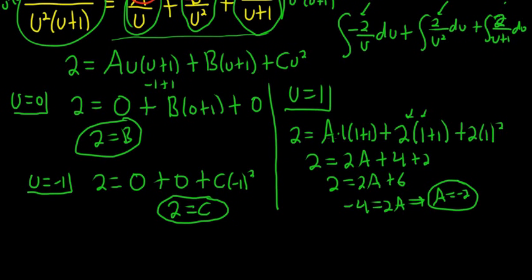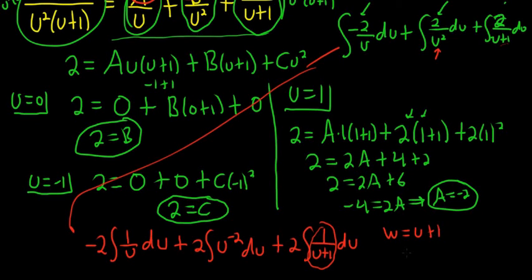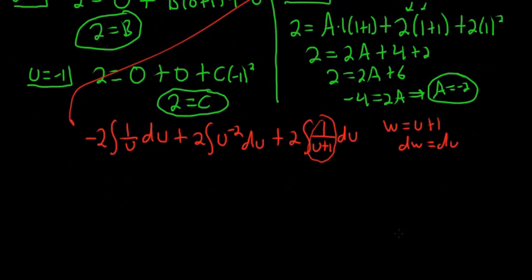All right. I'm going to go ahead and rewrite all this down here so I have more room to work. So this one is negative 2, 1 over u du. That's a really easy integral. It's a ln. This one, we can bring the u upstairs, and we'll use the power rule. So 2u to the negative 2 du. And for this last one here, I'll go ahead and write it again. So plus 2, 1 over u plus 1 du. You can make an easy substitution to do this one. You can let w equals u plus 1. So dw equals du.